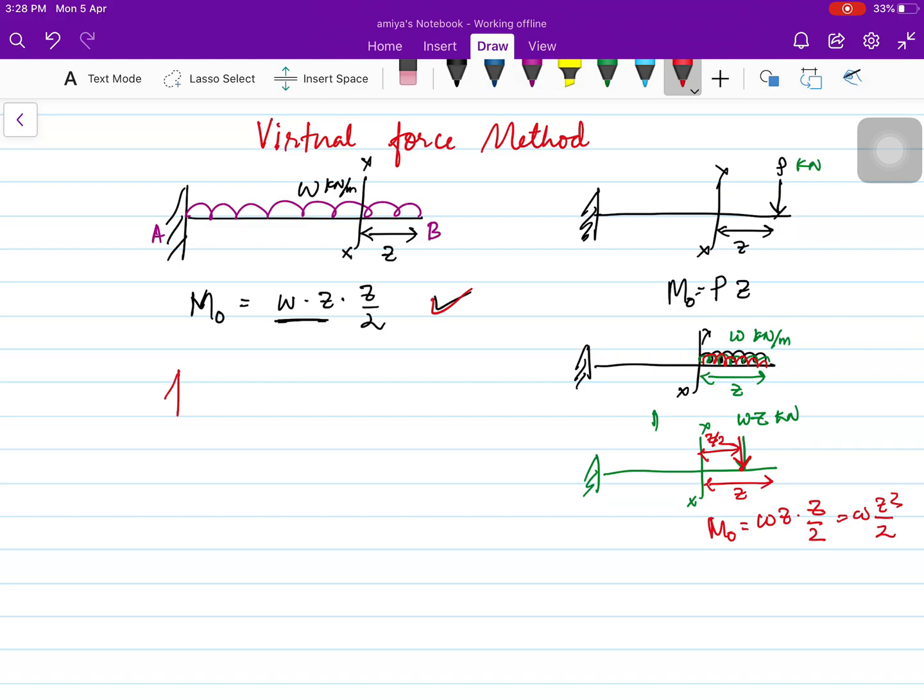Now in order to find out the deflection at B, I want to apply a virtual unit force at B. So virtual unit force P_B equals 1. My moment due to this virtual unit force equals 1 into the same section at a distance of Z, similar to what I have taken here.